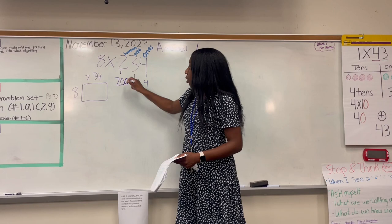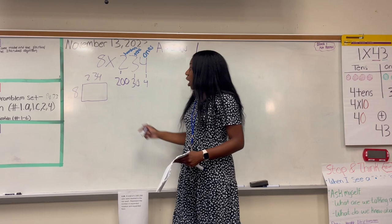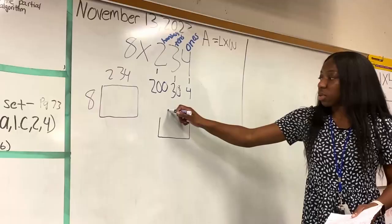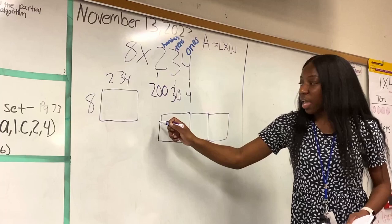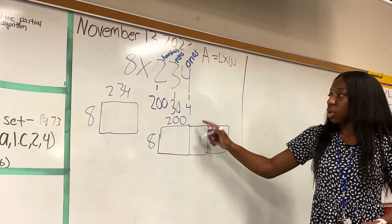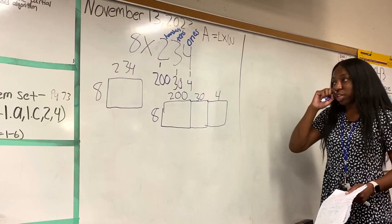So instead of solving it this method where I'm just doing eight times 234, I'm going to break it down into these three. So that would look like this. Three boxes. I'm going to keep the eight where it's at. Put 200 for the first box, 30 for the second, and then four for the last.